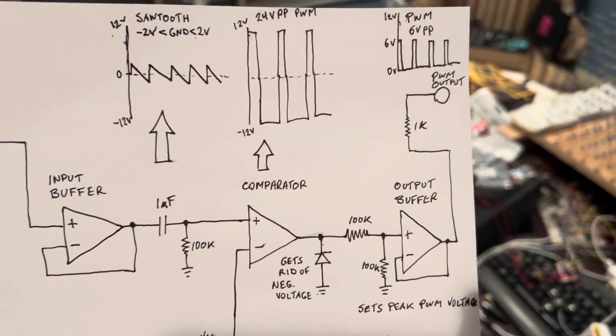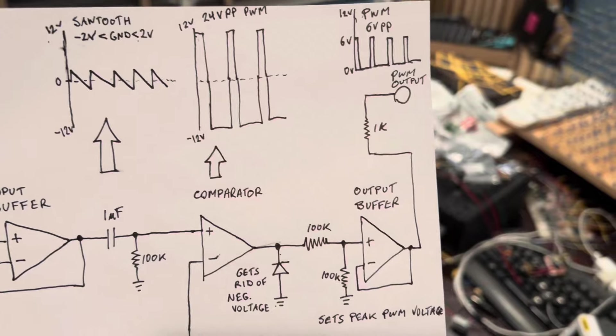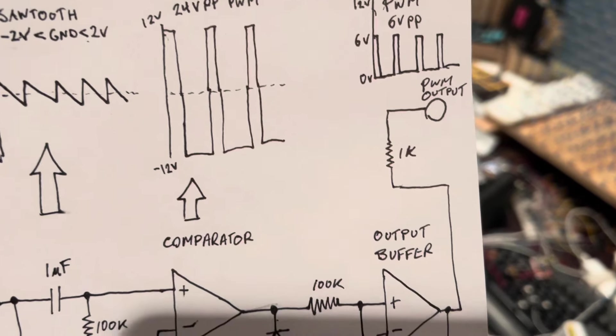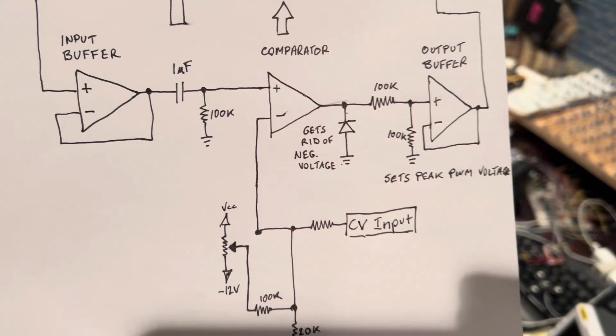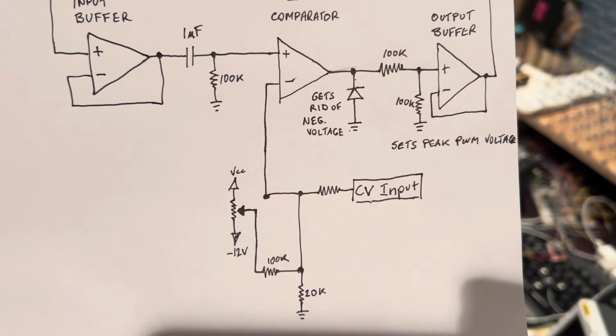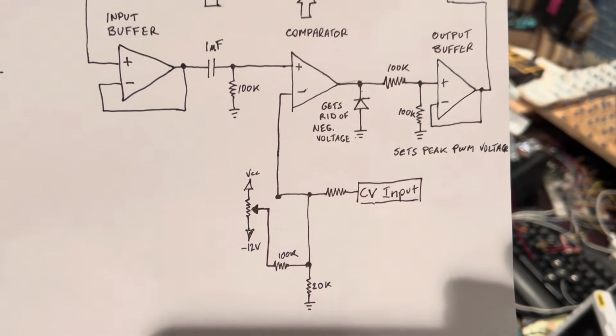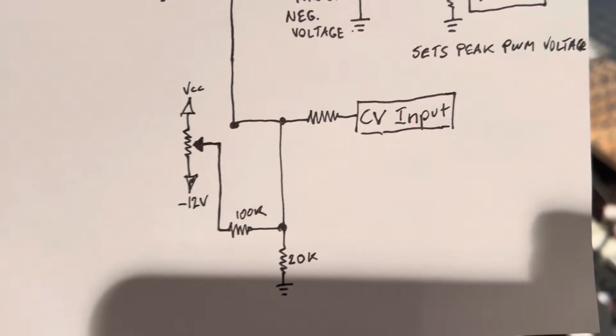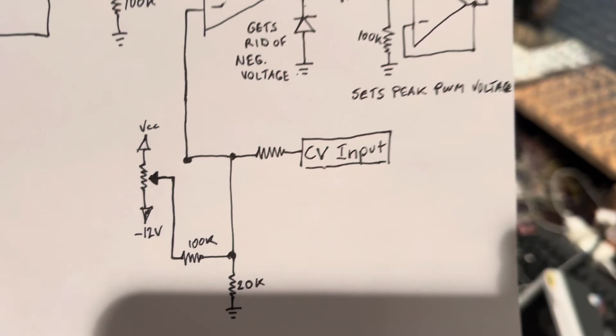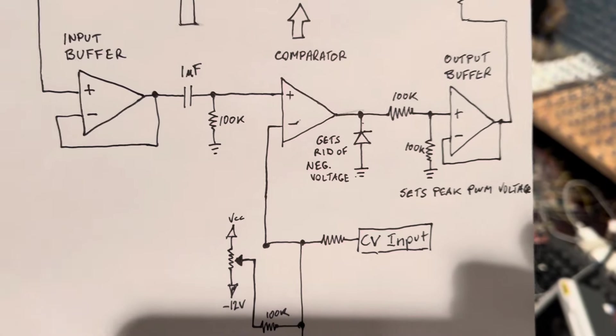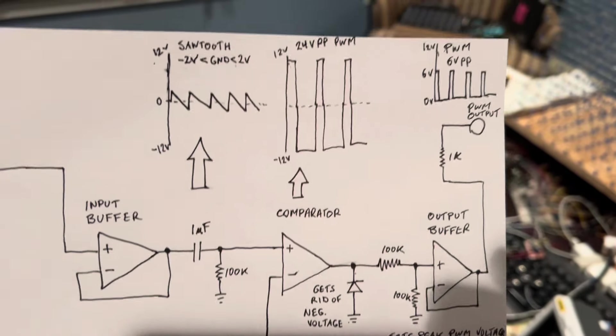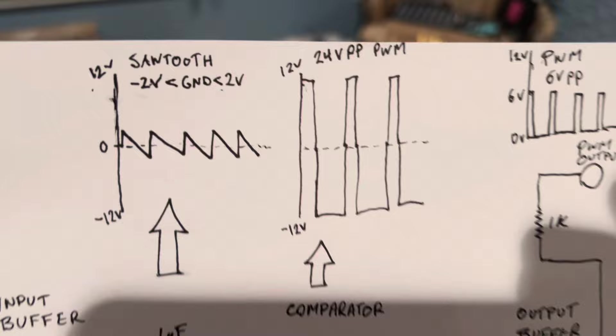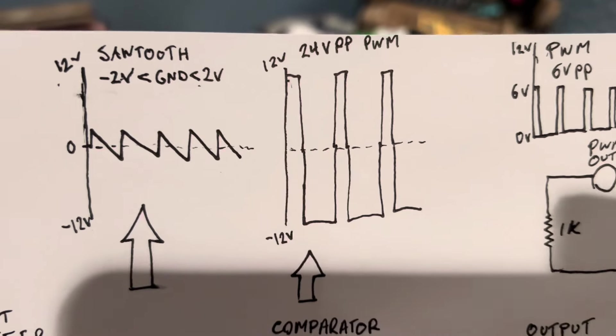The output signal is buffered and goes to the PWM signal. The reference voltage for the comparator can be handled manually or with a control voltage input to change the reference voltage, and that changes the PWM duty cycle.